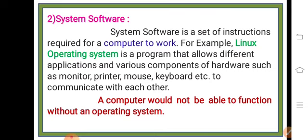Basically, system software is a set of instructions required for a computer to work. The Linux operating system is a program that allows different applications and various components of hardware — such as a monitor, printer, mouse, and keyboard — to communicate with each other.